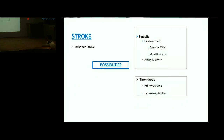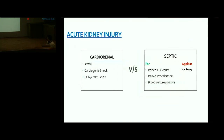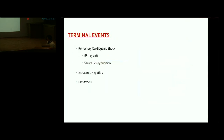Regarding the stroke, possibilities included cardioembolic stroke from extensive anterior wall MI or mural thrombus, artery-to-artery embolism from carotid atherosclerosis, and thrombotic causes including in-situ atherosclerosis and hypercoagulable states. For AKI, cardiorenal versus septic etiology was considered. Though raised TLC and positive blood culture suggested sepsis, no fever was documented; cardiogenic shock alone could explain the organ dysfunction.